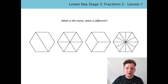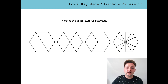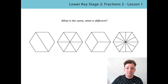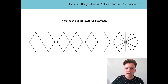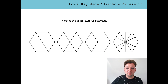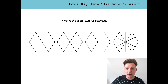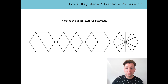Let's get started. Here are four shapes. Each shape is a whole and each one is 2D and has six sides. We call these hexagons. What do you notice about the shapes? What's the same and what's different? Now would be a good time to pause the video and tell somebody close by. I wonder if you found that while the whole stays the same, the number of equal parts is different.